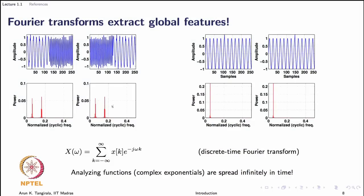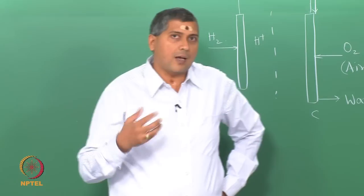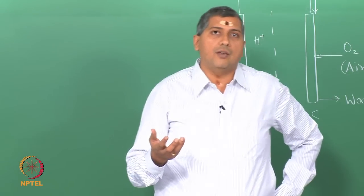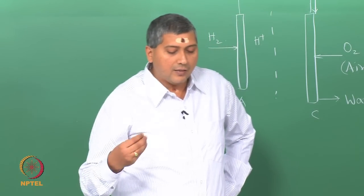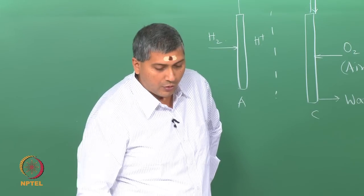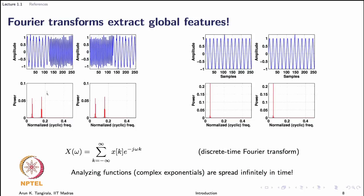If I look at the spectral plots, we are not able to distinguish between these two signals, because what has happened is we have thrown out what is known as phase information. Typically it is hard to use phase information because of noise and other reasons. Normally we work with the spectra, and the spectral density is unable to get you the time features of the signal — that is, it cannot tell you which frequency occurred first and which occurred later.